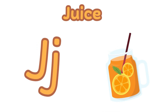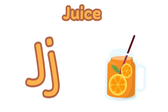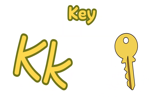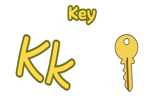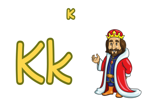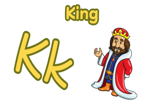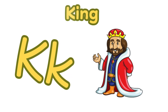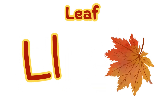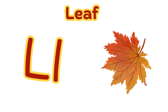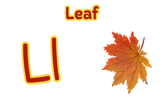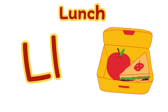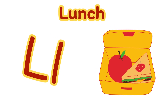J is for juice. J, j, j — juice. K is for king. K, k, k — king. L is for lion. L, l, l — lion.